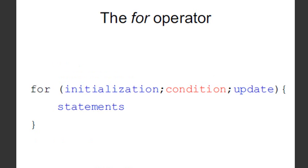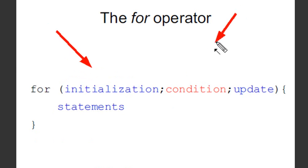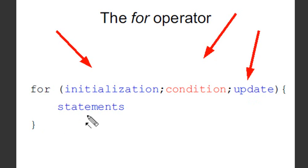The for loop is my favorite looping mechanism — it's very structured. Basically what you do is you put in an initialization, a condition, and an update. Your condition is right here, your update is right here, and it executes all the statements in that block. It's very structured and I use it a lot. We're going to show you examples of that today.